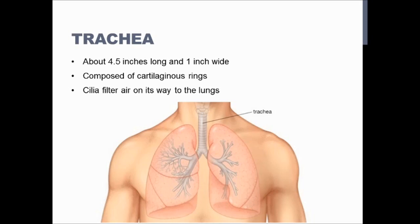The lungs are not the same size. The left lung is a little smaller than the right lung because it has to make room for the heart, which sits more to the left. That's why you put your hand over the left side of your chest for the Pledge of Allegiance. The left lung has two lobes and the right lung has three. The purpose of the lungs is to distribute air and perform gas exchange through all of their bronchi, bronchioles, and alveoli.